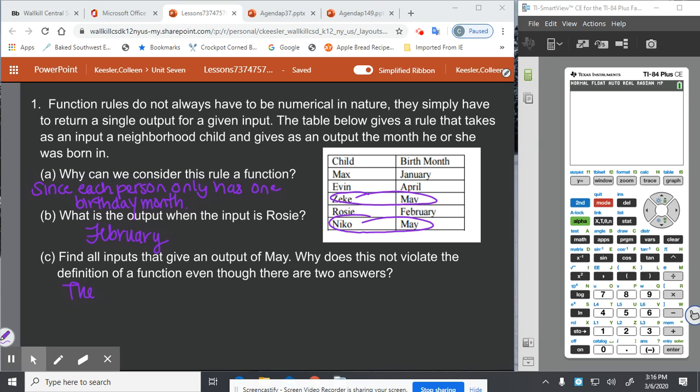And it's because there is still only one range value for each domain value. Or, in other words, it's okay to have multiple outputs as long as they're paired with different inputs.